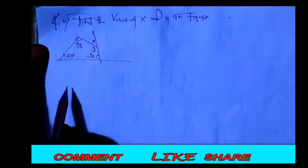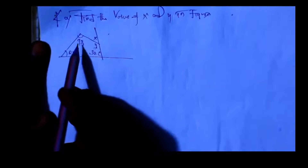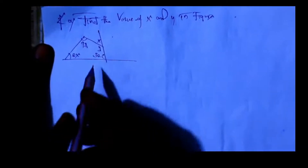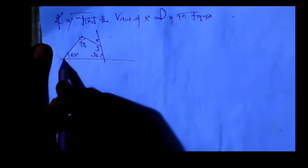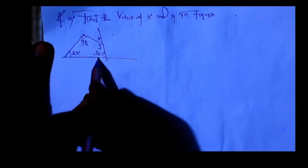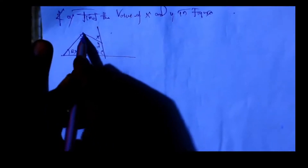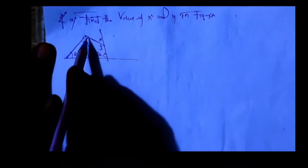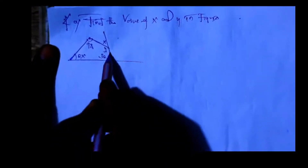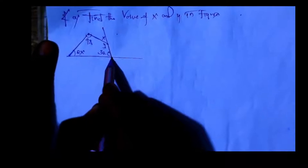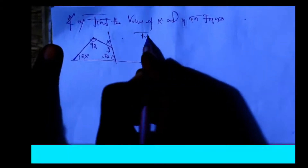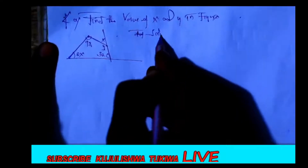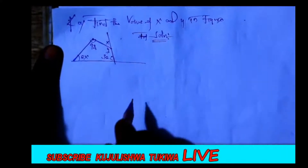And therefore we know that this is a polygon with four angles. So, since it's a quadrilateral, that means the total degrees — this is the solution for this question.